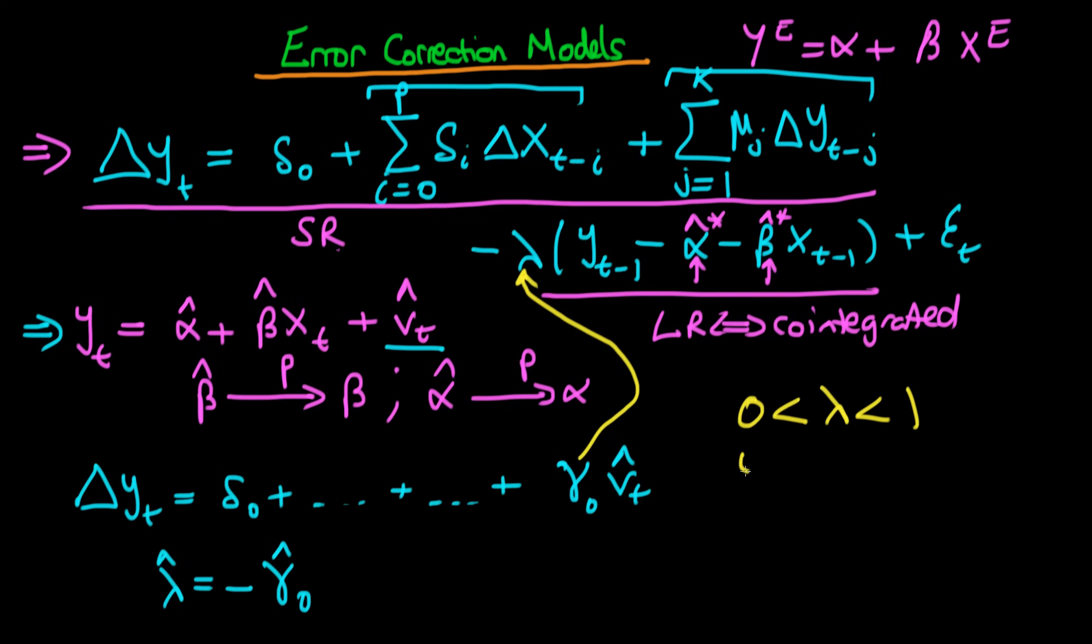And the idea with lambda is that it is greater than naught but it is less than one. It's greater than naught such that if yt is greater than the equilibrium value then we take off a bit of y, so there is a negative change in y. And if yt is less than the equilibrium level then we add a bit on. So lambda being greater than naught ensures that that is the case.